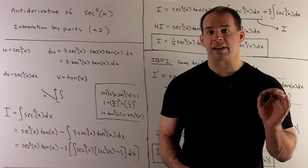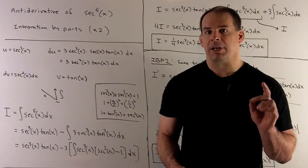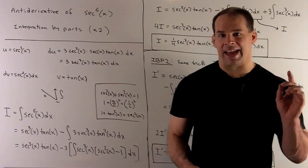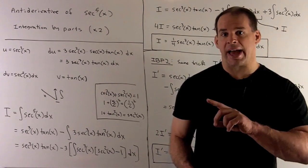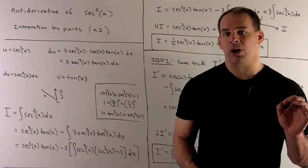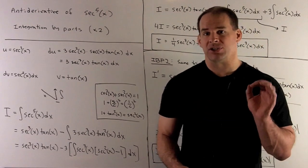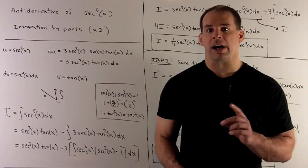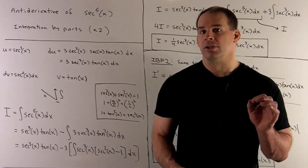For the second feature, after you work through feature one, on your right-hand side you're going to be left with finding the antiderivative of secant to a power that's two less. This won't get us directly to our answer — we're going to have to keep working our way down by twos until we get to the antiderivative of secant, which you're supposed to have memorized. So let's proceed.